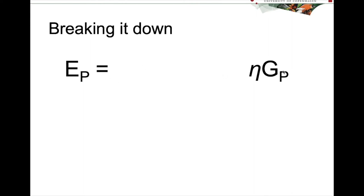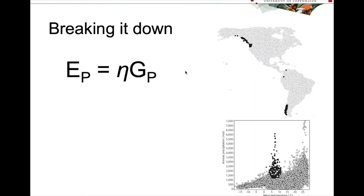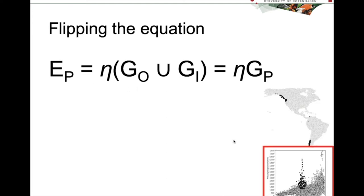So if we now think about this part, EP is equal to EDA GP. The set of environmental conditions that are suitable for a particular species is the same as the set of environmental conditions represented in geography that are potentially suitable. So that shows this relationship.